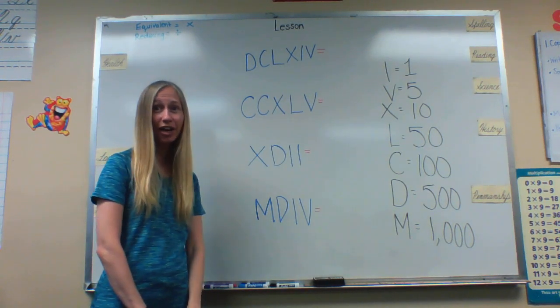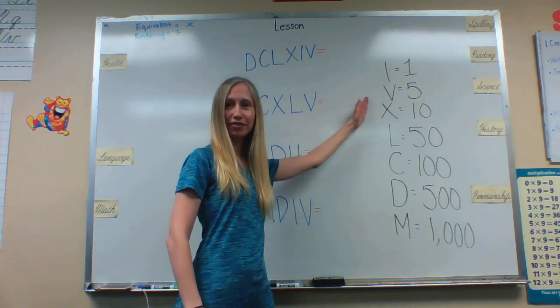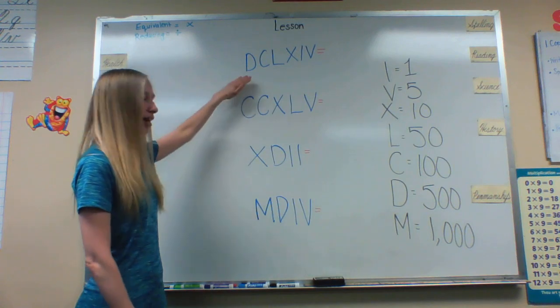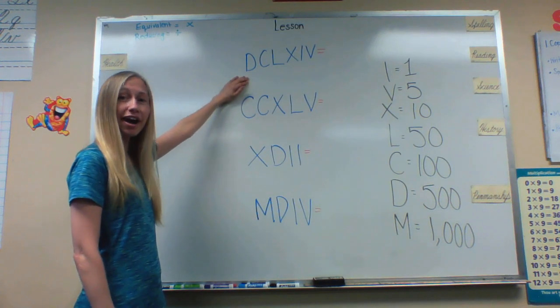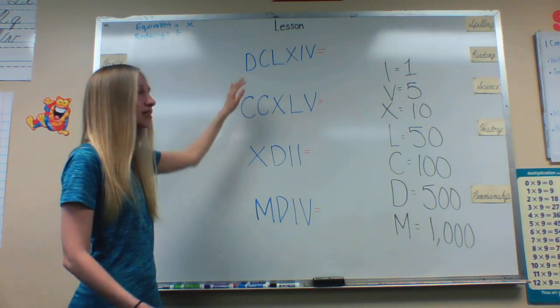And finally we are going to be doing our Roman numerals. Over here I have the answer key of the different letters and what the different letters stand for. And here I have our problems. Now the way I like to do it is I like to write down underneath each letter what they represent.